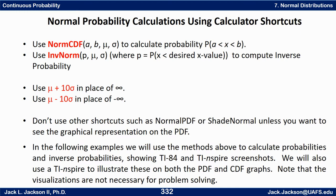If we need to use infinity or negative infinity and you're not on a TI-Nspire, we can use μ minus 10σ for negative infinity and μ plus 10σ for positive infinity. You do not have to use shortcuts like normalPDF or ShadeNorm unless you want to see the graphical representation. The following examples will mainly use normCDF and inverseNorm.